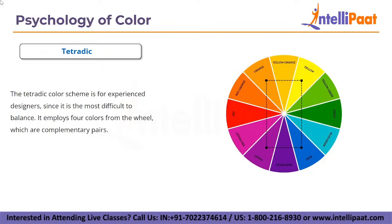The tetradic or double complementary scheme is for the experienced designer since it is the most difficult to balance. It employs four colors from the wheel which form complementary pairs — if you connect the points on the chosen colors they form a rectangle. The scheme is hard to harmonize, but if done right the results can be stunning.